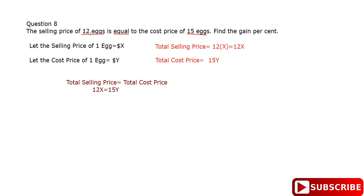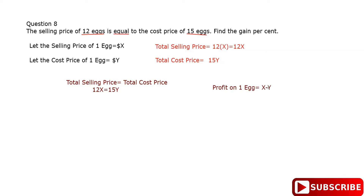If we can sell 12 eggs for the cost of buying 15 eggs, that means we make a profit. The profit on one egg is the selling price minus the cost price: x minus y. So x minus y is my profit.